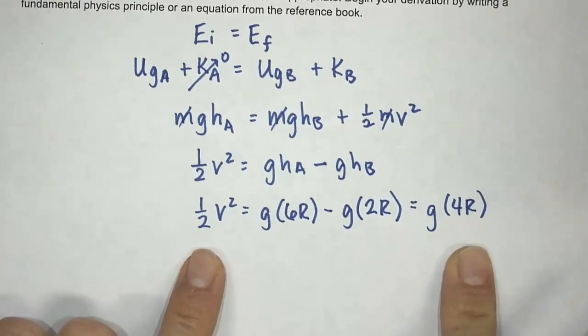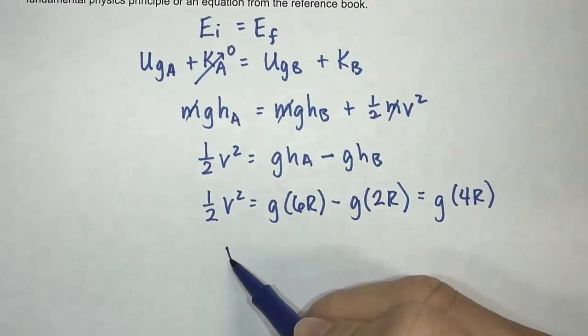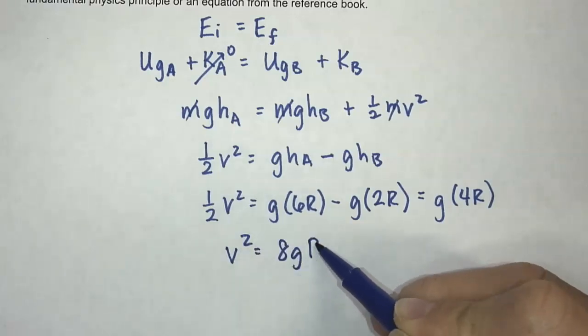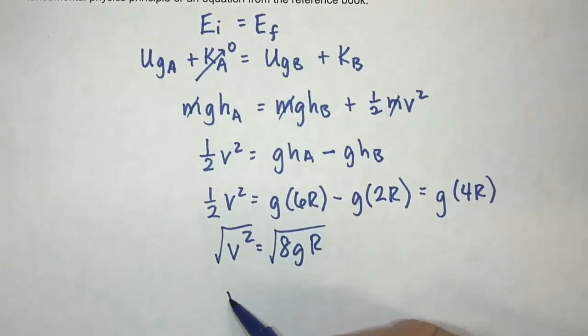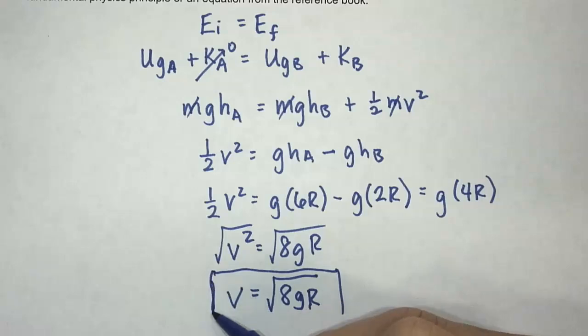So now we're looking for V. What I'm going to do here is multiply 2 on both sides. So that gives me V squared equals 8gR and square root both sides. And I get V is equal to square root 8gR. And so that's my final answer right there.